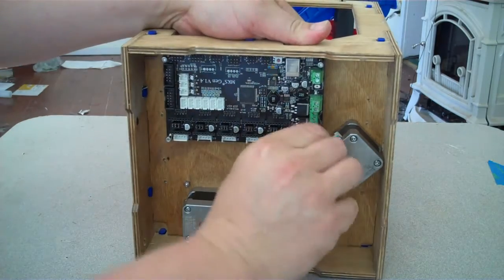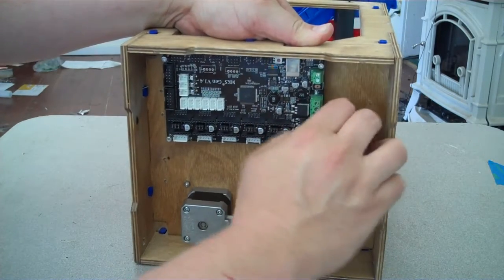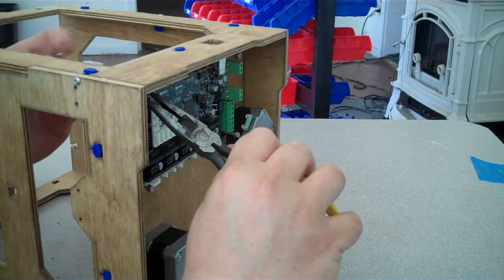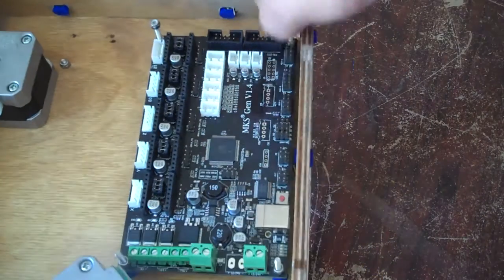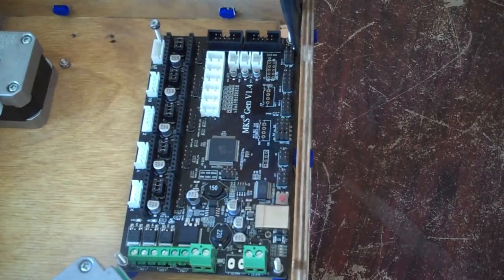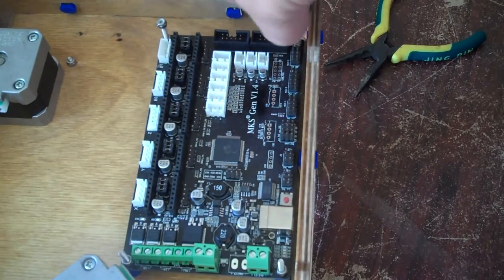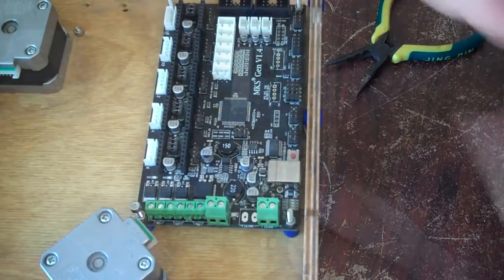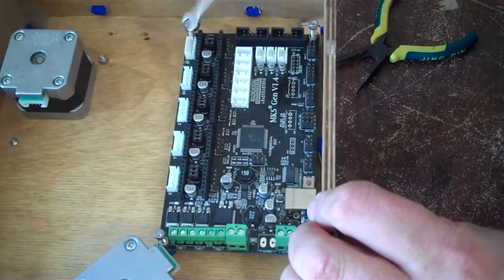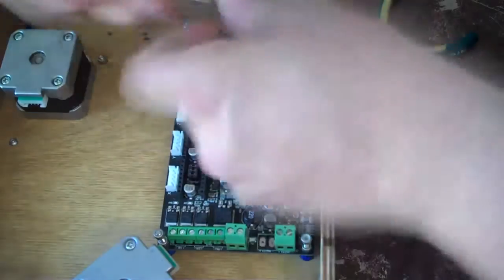Secure the board using four M3 nylock nuts. This can take some real patience because of the length of the screws. Add four additional M3 nylock nuts to the tops of the posts but don't tighten them all the way. Tighten them just far enough so that the end of the screw is flush with the nylock retainer on the nut.